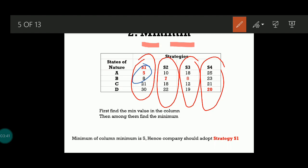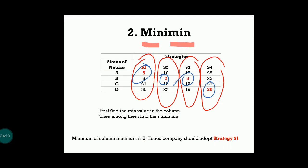So strategy S1 is again selected. To summarize: in S1 the minimum is 5, S2 is 7, S3 is 8, S4 the lowest value is 20. Among these four numbers the least is 5, which falls in column S1. So the strategy to be adopted is S1 — minimum of the column minimum is 5, hence the company should adopt strategy S1.